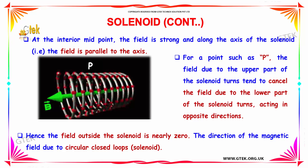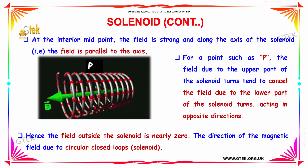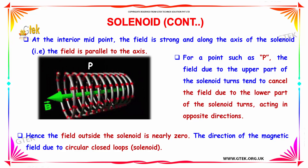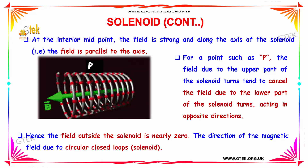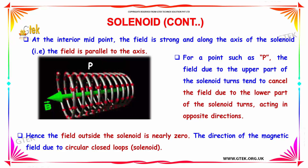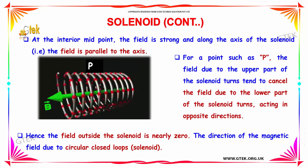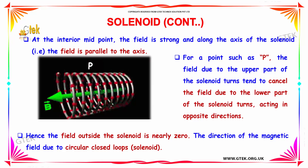You can see, from here it's going up, this one is going down, so it's cancelled here. Hence, the field outside the solenoid is nearly zero.